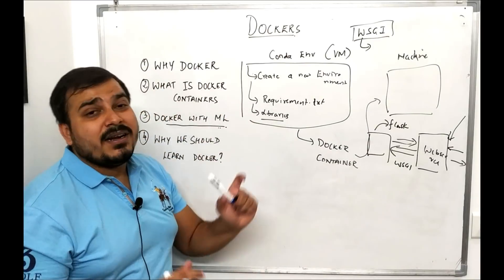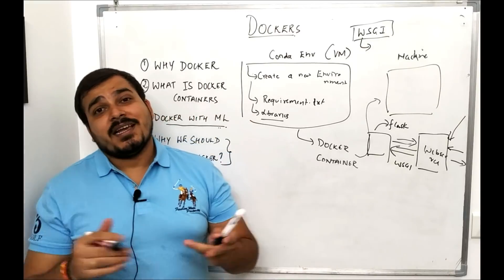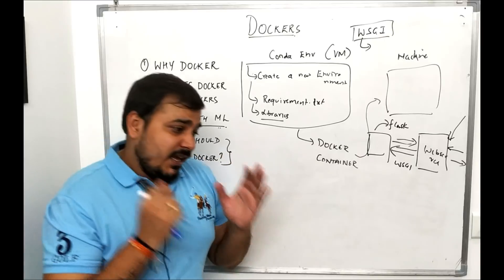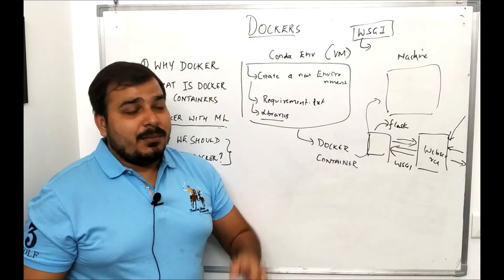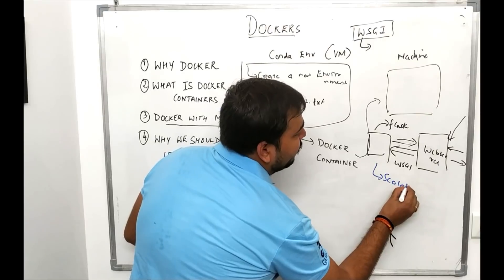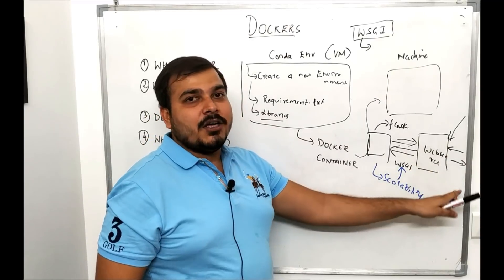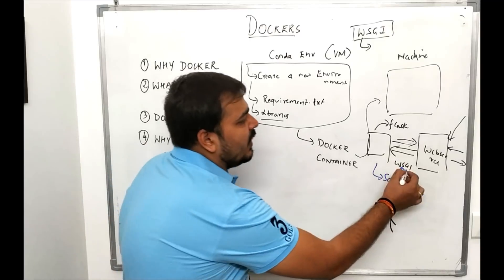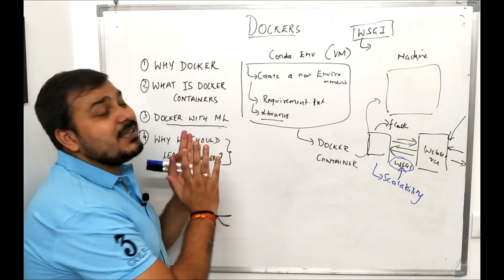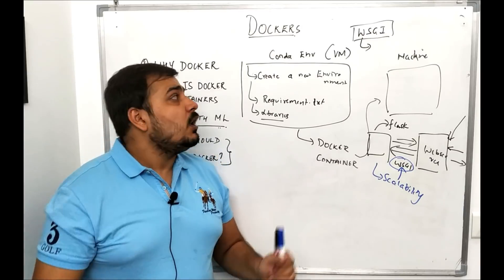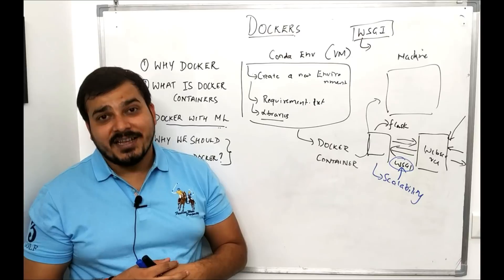Why should we learn Docker? In the whole lifecycle of a data science project we always have to work with the DevOps team, and if you know how to communicate well with them you can do a wonderful job deploying models in a scalable way. I'll focus on scalability and show how to use WSGI with different web servers like Apache, Azure, and AWS. That was the introduction to Docker — please share this playlist, subscribe to the channel, and I'll see you in the next video.